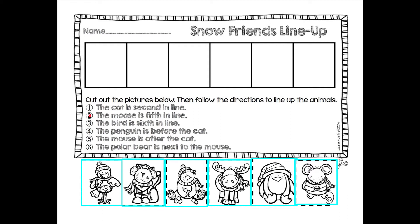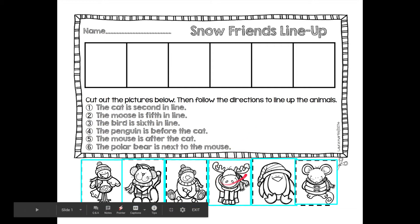Number two says the moose is fifth in line. It might be a good idea to come right back up here and count again. First, second, third, fourth, fifth, sixth. You probably saw where the fifth one was, so you'll come down to get your moose and take him to the fifth spot.